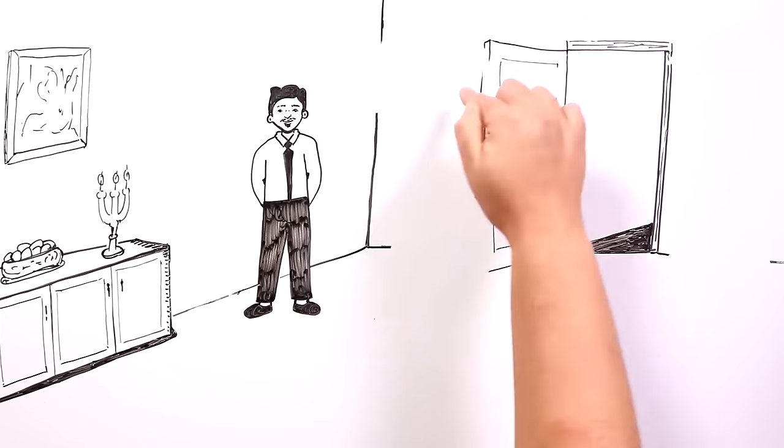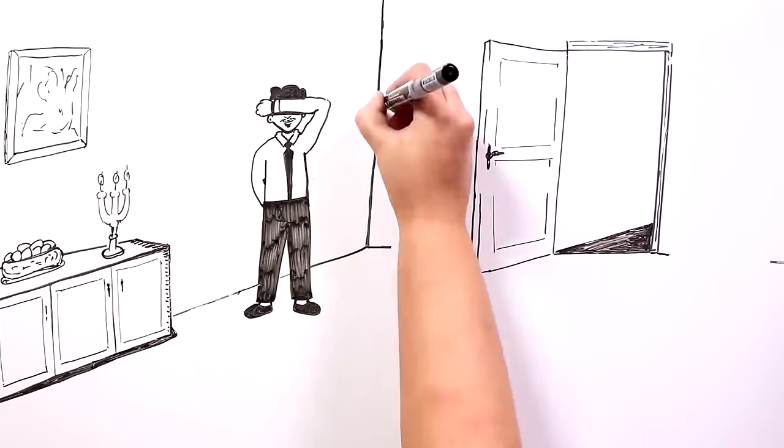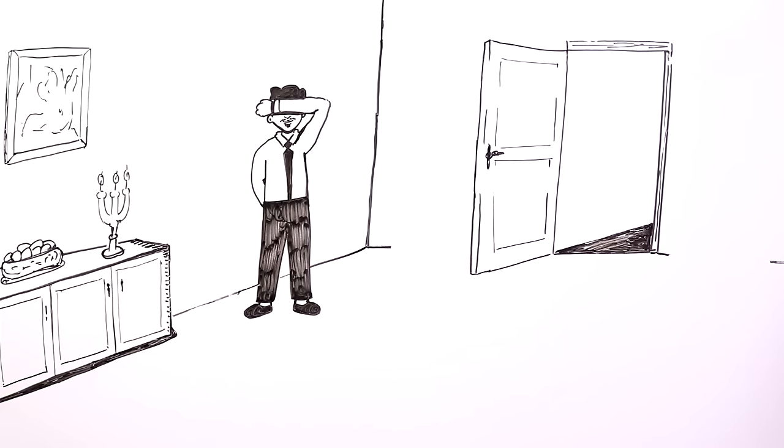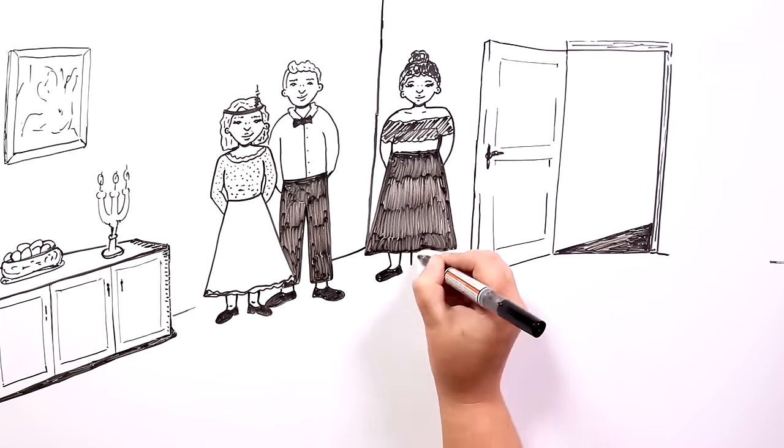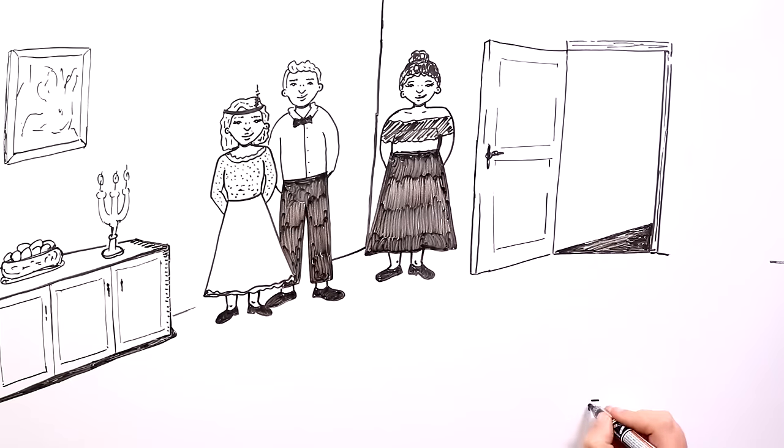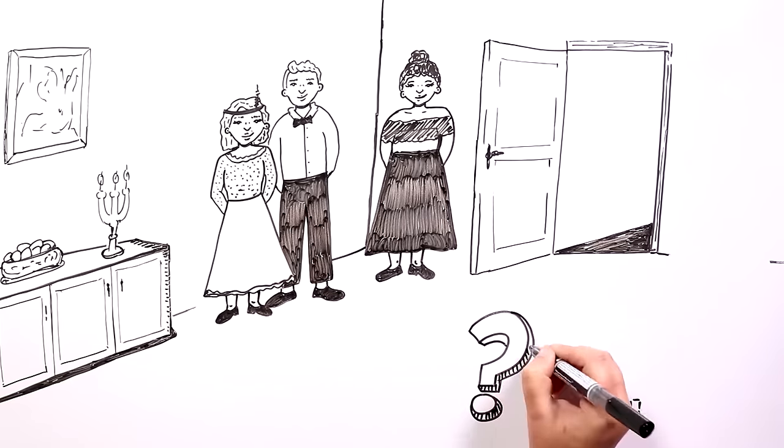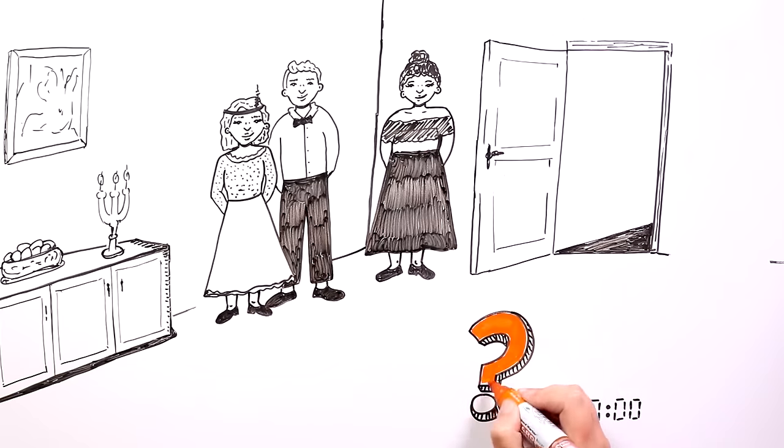The guests hid in different parts of the house, while the soon-to-be groom counted while facing one corner, to then go look for them. One by one, he found each guest, who would go back to the main hall to have fun. However, after it was midnight, and looking around the entire house, Alonzo had found everyone, except for one person. Matilda was nowhere to be found.